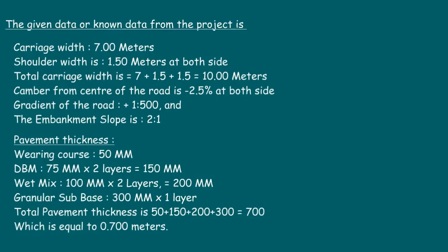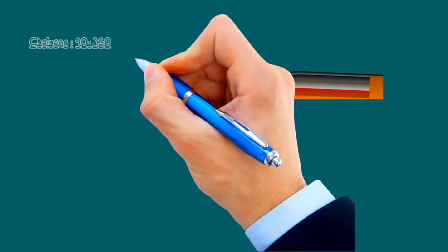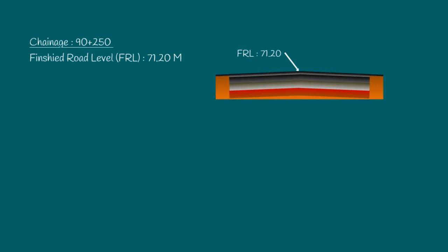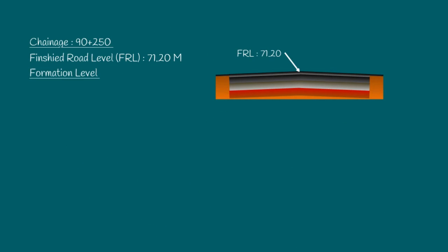We are going to calculate the quantity of earthwork for a 25-meter stretch, from chainage 90+250 to 90+275. The known data: 1st chainage 90+250, FRL (finished road level) is 71.2. The formation level is finished road level minus total pavement thickness, which is 71.2 minus 0.7, equals 70.5 meters.